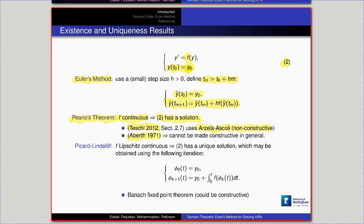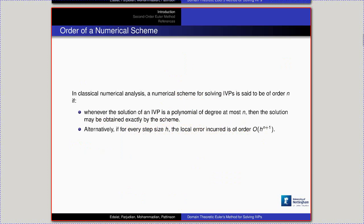In general, just assuming f is continuous doesn't make things constructive. But if we strengthen the condition to Lipschitz continuity, then we can prove the IVP has a unique solution. This can be done via Euler's method, but it's also common to use the Picard-Lindelöf theorem, which turns the differential equation into an integral equation, defines an iteration, and uses the Banach fixed point theorem to prove convergence to the unique solution — which can be made constructive.